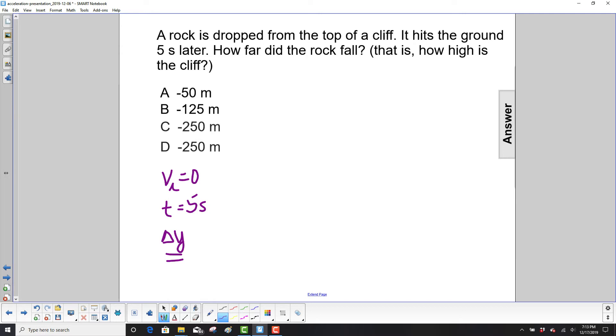We have a displacement, we have an initial velocity, we have a time. That looks like the second kinematics equation, where delta y is v_i*t plus one-half a*t squared.